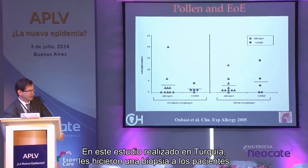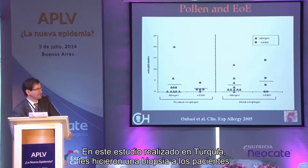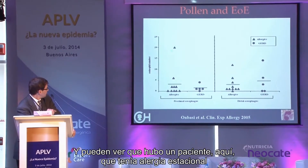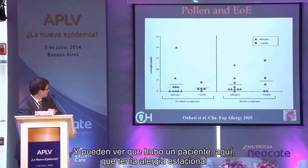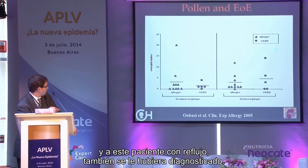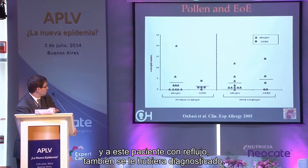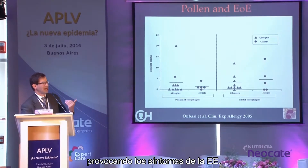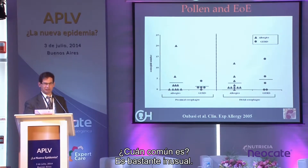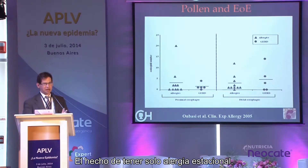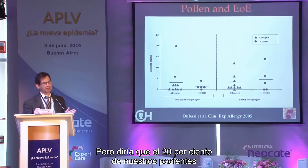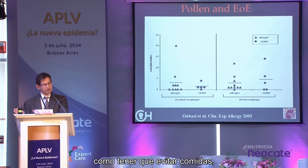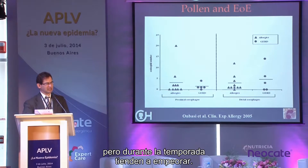A study from Turkey biopsied patients during pollen season and showed that purely seasonal allergies can cause EOE-level esophageal eosinophilia. About 20% of our patients have a seasonal component such that they may need to avoid foods but things worsen during pollen season. Truly seasonal-only EOE — where diet is irrelevant — is probably relatively rare.